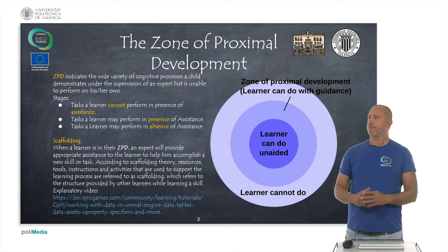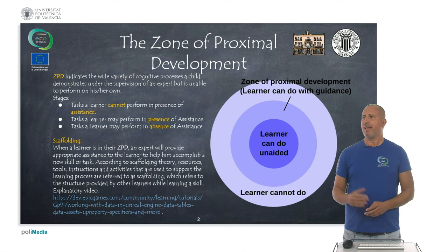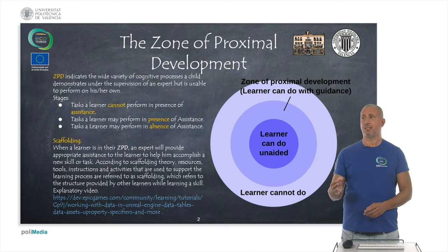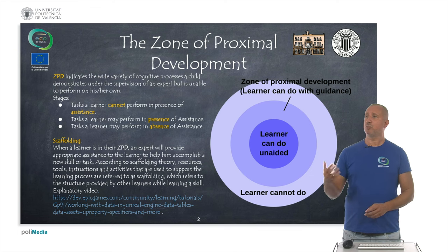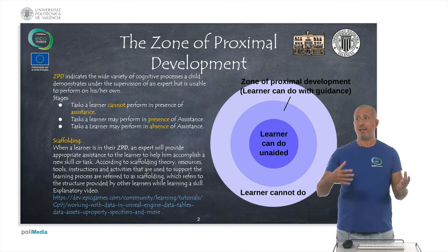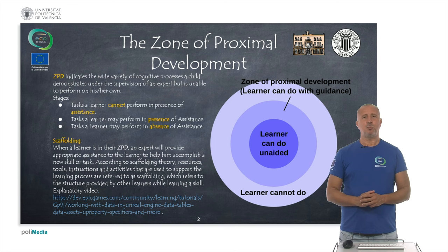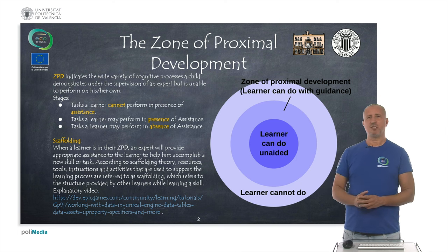This scheme leads us also to the concept of scaffolding. When a learner is in their zone of proximal development, an expert will provide appropriate assistance to help them accomplish a new skill or task. According to scaffolding theory, resources, tools, instructions, and activities used to support the learning process are referred to as scaffolding, which refers to the structure provided by other learners while learning a skill. There is an explanatory video about scaffolding and the zone of proximal development here, which I strongly suggest you watch.